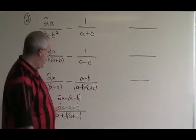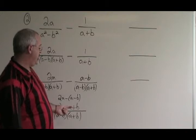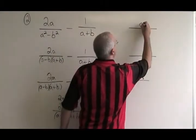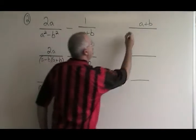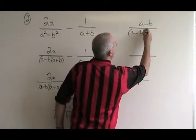Now we simplify. 2a minus a is a, so the numerator becomes a plus b. The denominator is still the common, a minus b, a plus b.